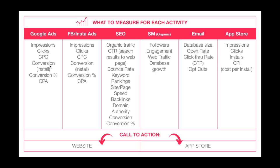Conversion — so a conversion would be an install for an app, or for a website visit it might be subscribing, downloading an ebook, or some free tool. Or if you're an e-commerce store, it could actually be a sale where they're making a purchase. And then you also want to look at CPA — cost per acquisition, cost per sale. Those are essentially interchangeable.